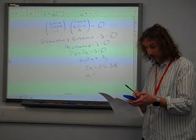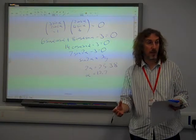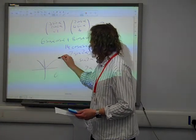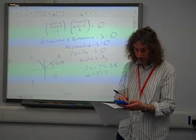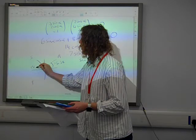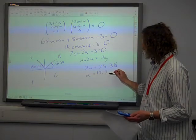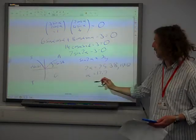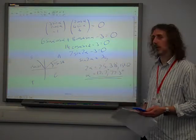So alpha is a half of that, 12.7. But of course it wants the two smallest alphas that it can be, so we need to do the cat's diagram. If that's 25.38, that one is 180 minus that, which is 154.62, and we divide that by two as well to get the other value, which was 77.3 degrees.